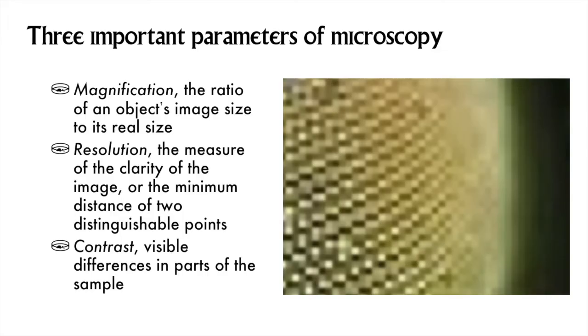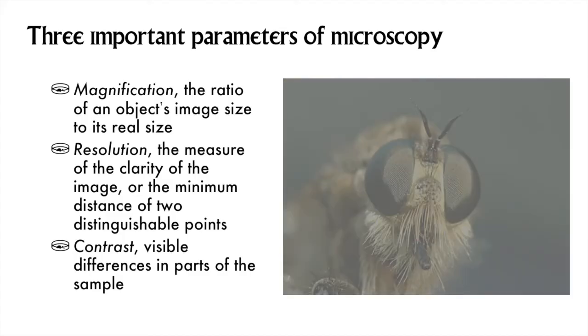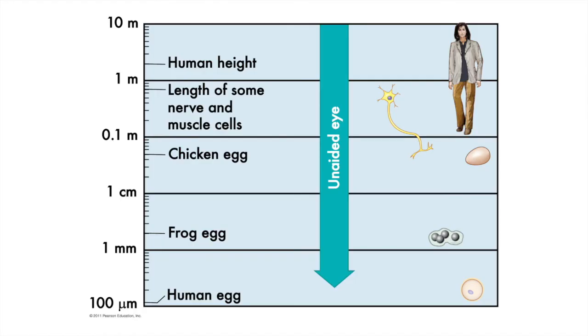In order to keep magnifying, you need to increase resolution as well. A third important parameter of microscopy is contrast. Back to the robber fly. You can see that I've tinkered with the image and brought the contrast down. What is the effect? It has become more difficult to see as though the fly were in a haze or a fog. It's still magnified and the resolution is the same, but it is still less clear than before. So what can microscopes do for us?